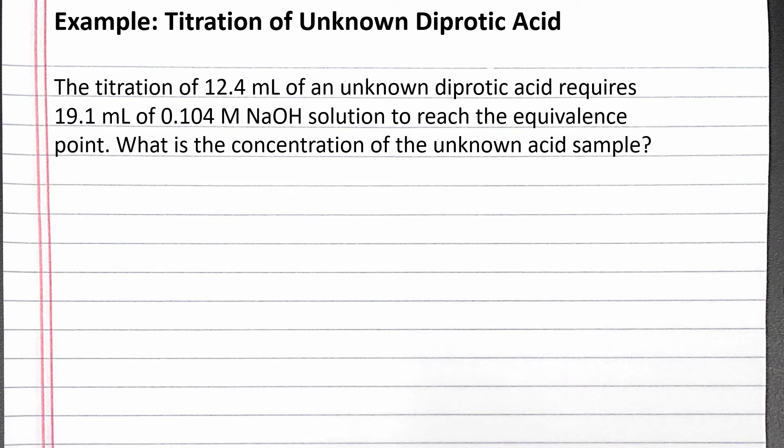In this example, we calculate the concentration of an unknown diprotic acid based on experimental titration data. The problem reads: the titration of 12.4 mL of an unknown diprotic acid requires 19.1 mL of 0.104 molar sodium hydroxide solution to reach the equivalence point. What is the concentration of the unknown acid sample?